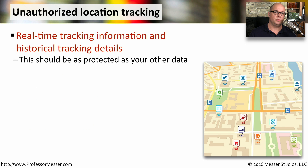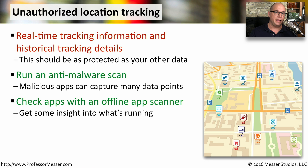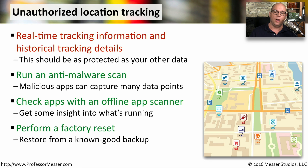As we carry our mobile devices with us, they're tracking everywhere we go in real time. As we go different places, this information is stored, and you can historically go back and see everywhere you've been. This is obviously very sensitive data, and it should be protected exactly the same as all of the other personal information on our device. There is certainly malware out there that can take advantage of this information, so we want to be sure to run an anti-malware scan and keep that malicious software off of our mobile device. Before you install an application, you may want to check it with an offline application scanner just to see if it's well-known and that other people have verified it is legitimate. And if you are concerned that something might be on your mobile device, always consider performing a factory reset and restoring everything from a backup.